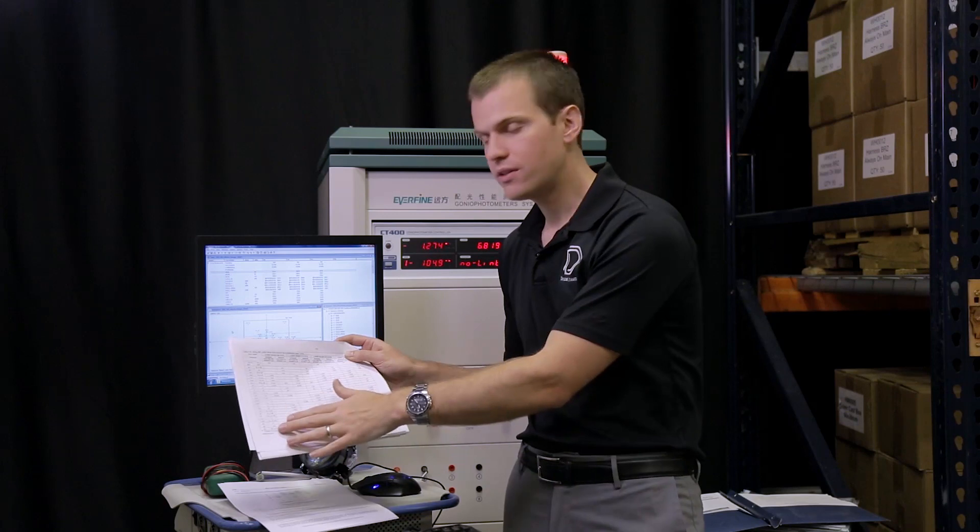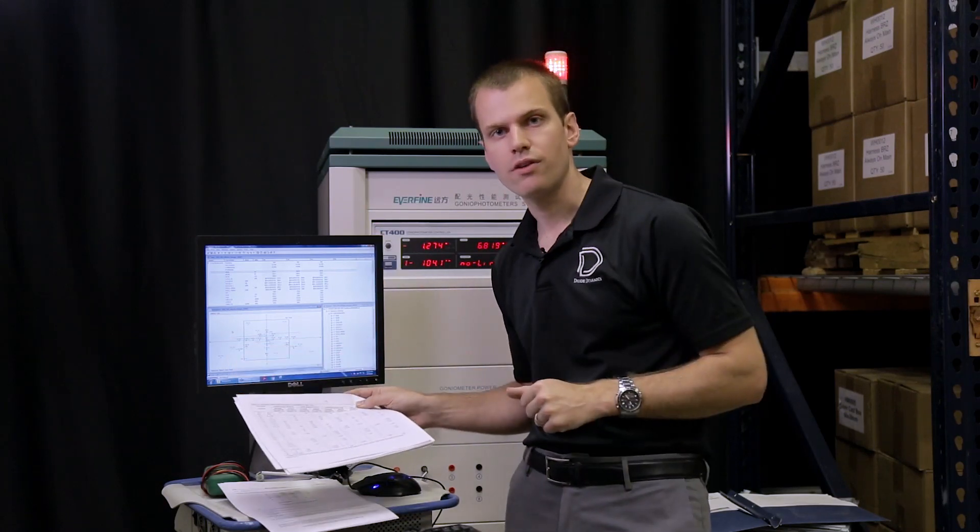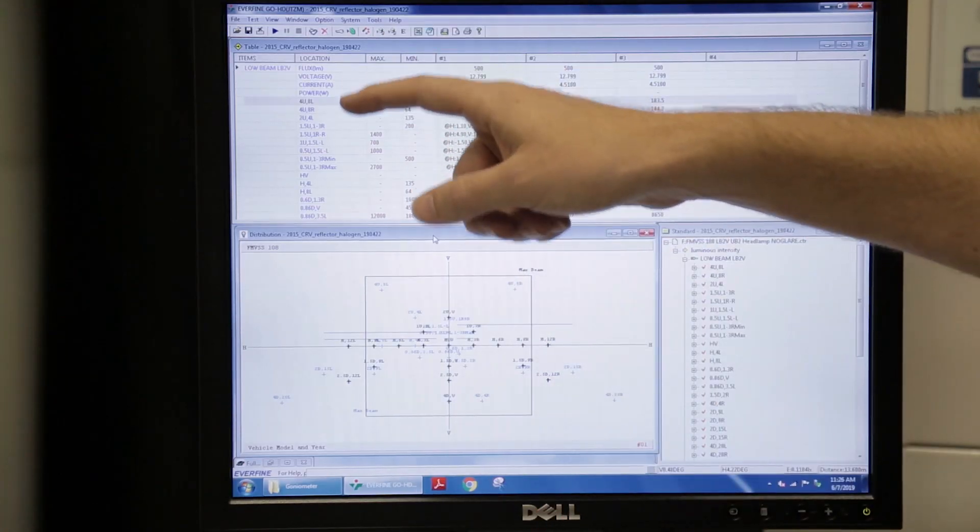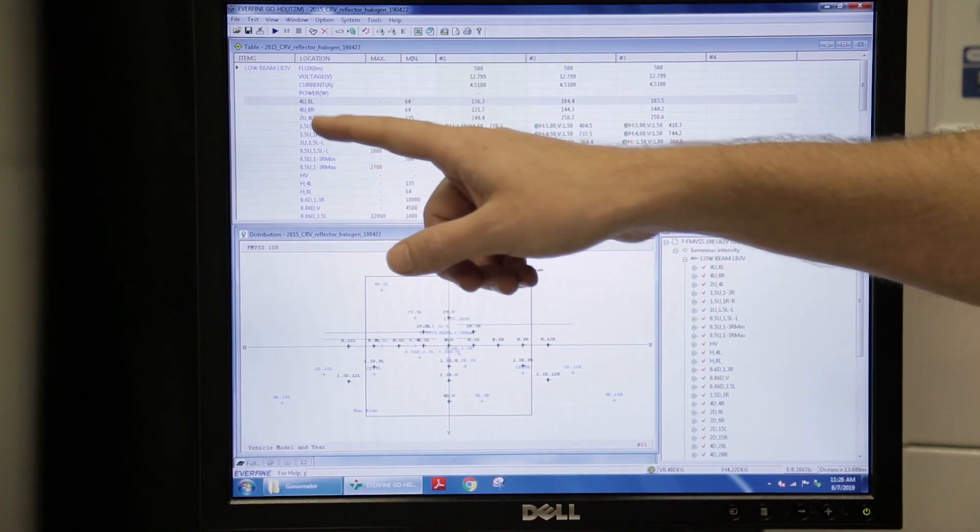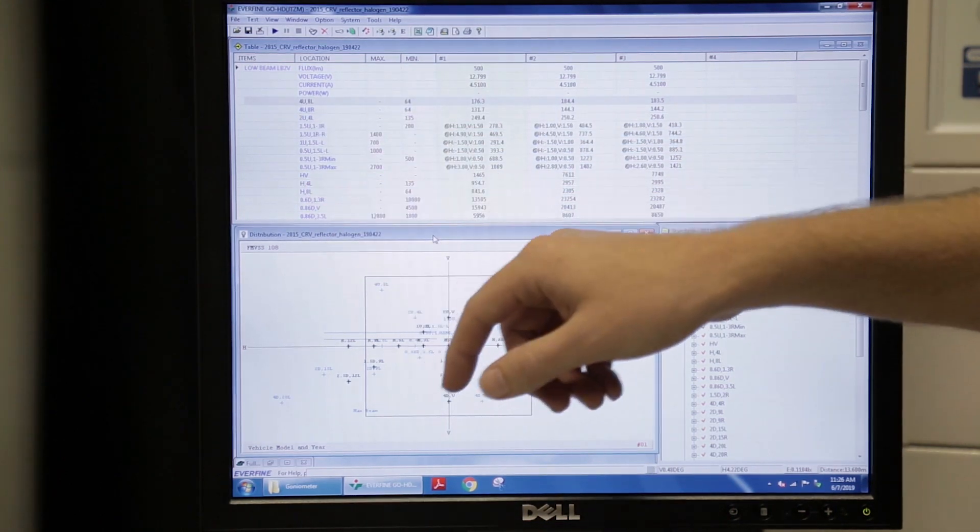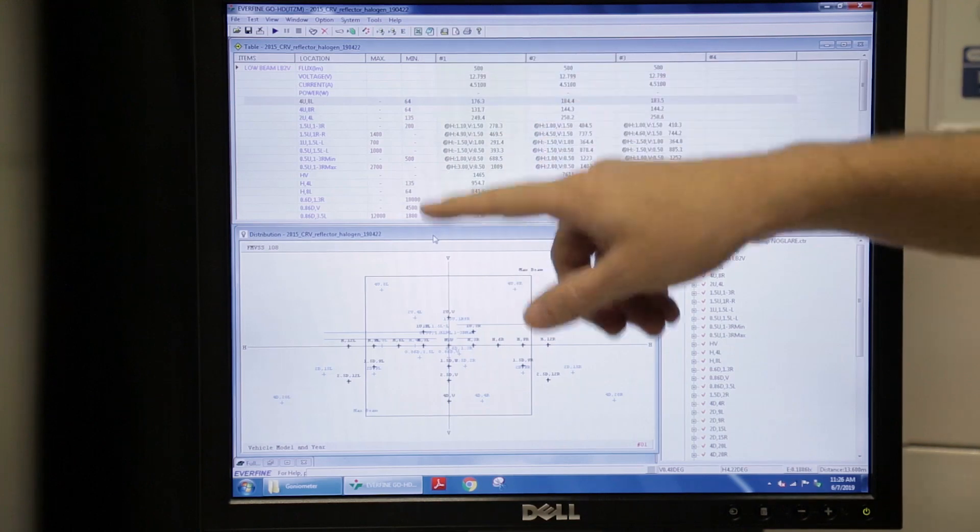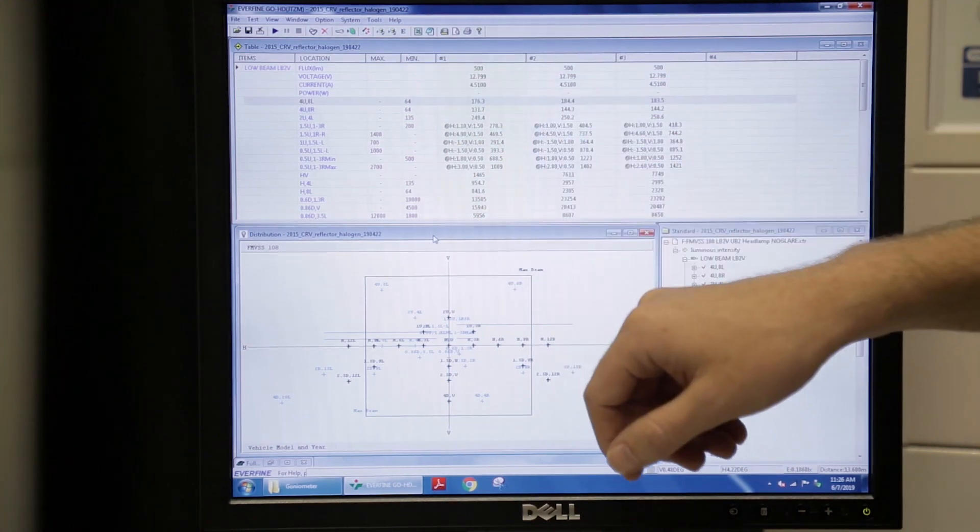So all of these get translated directly into our software. So you can see we have listed out all those test points in the same way two up four left H four left and then our maximum or minimum values for each one of those points.